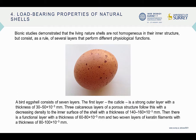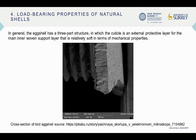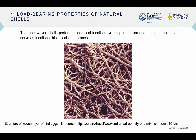Load-bearing properties of natural shells: a bird eggshell consists of seven layers. The first layer, the cuticle, is a strong outer layer with a thickness of 30 to 50 micrometers, followed by two woven layers of keratin filaments with a thickness of 80 to 100 micrometers.